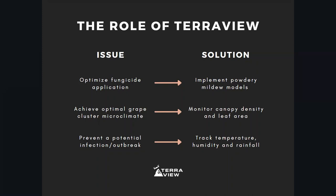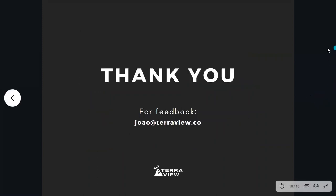Finally, we need to track weather data including rainfall, because rainfall is actually detrimental to powdery mildew development. With rain and free moisture, a hyperparasite develops that fights and helps contain powdery mildew. By tracking all these factors, implementing models, and monitoring canopy density and leaf area, we can make sure an outbreak doesn't happen. That concludes my presentation on powdery mildew — if you have feedback, don't hesitate to send me an email, and thank you for being here. See you in the next video.